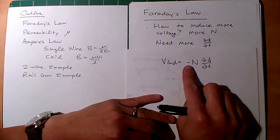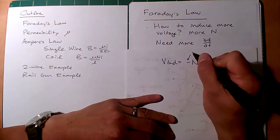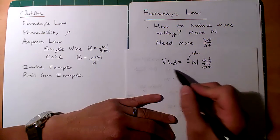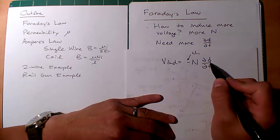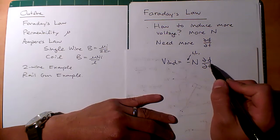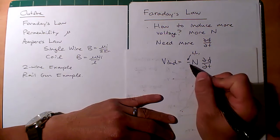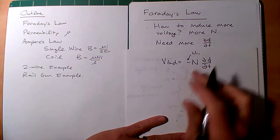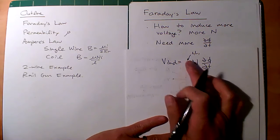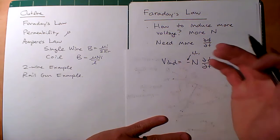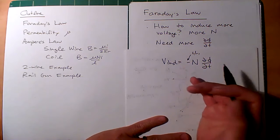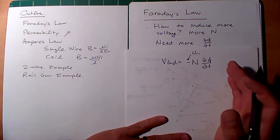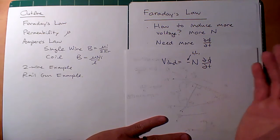This minus sign represents Lenz's Law — the opposition, how the V induced is induced in such a way to oppose that dΦ/dt, that change in flux. For most cases in this class, we actually ignore this minus sign. If we want to include it, it involves some contour and surface integrals. I will explain it, but you can skip that part of the video and not miss much. But if you're curious, please watch.